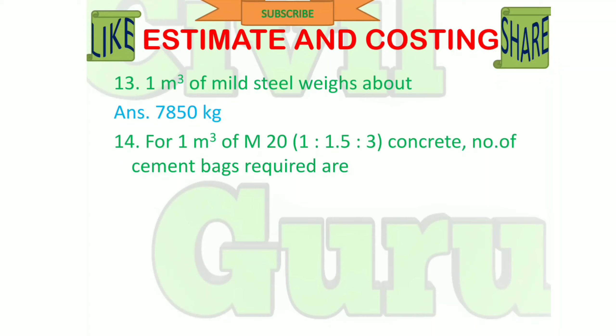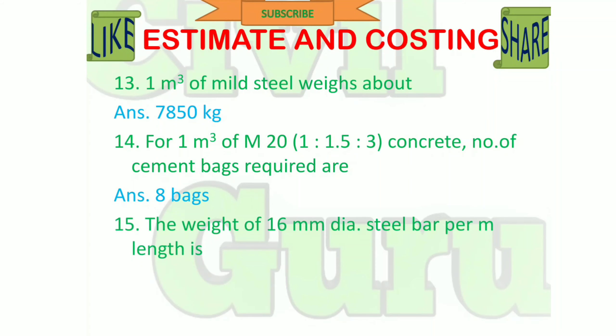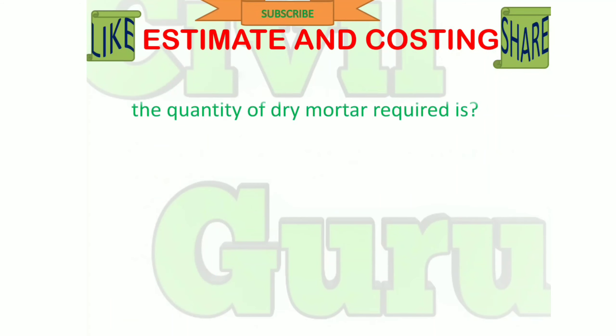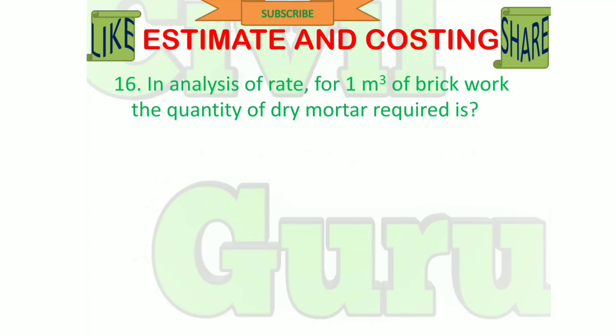For 1 cubic meter of M20 (1:1.5:3) concrete, the number of cement bags required is 8 bags. The weight of 16 mm diameter steel bar per meter length is 1.58 kg. In analysis of rates, for 1 cubic meter of brick work, the quantity of dry mortar required is 0.30 cubic meters.